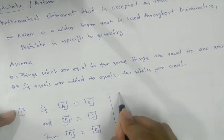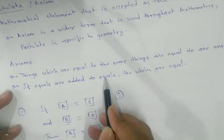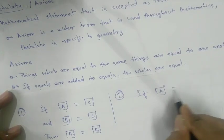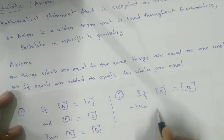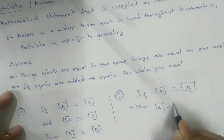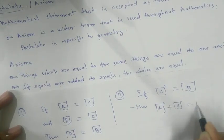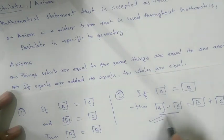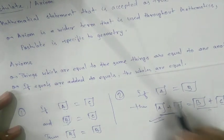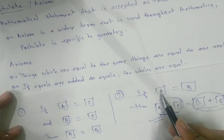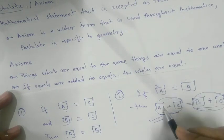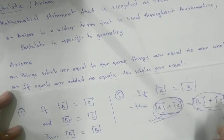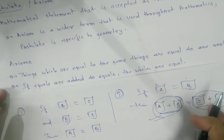Axiom 2: If equals are added to equals, the wholes are equal. If A is already equal to B, and we add an equal thing on both sides, the whole result will remain the same. For example, 2 kg mango equals 2 kg banana — if we add 1 kg apple to both sides, we get 3 kg on each side.